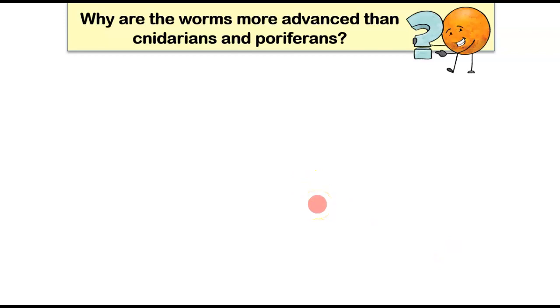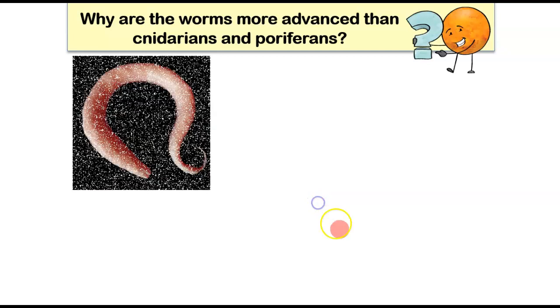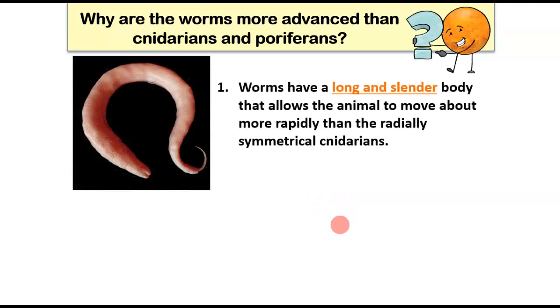Now part of your exit ticket today is going to be to ask why worms are considered more advanced than cnidarians and poriferans. And there's a lot of different reasons, so make sure that you pay attention to some of this because this is how you'll answer your exit ticket. Now worms in general have a long and slender body that allows the animal to move about more rapidly than the radially symmetric cnidarians. So remember cnidarians, like jellyfish, they are capable of movement, but their movement is more dictated by the ocean current than it is by a conscious desire to go in one specific direction.